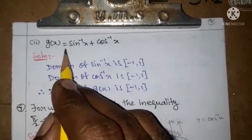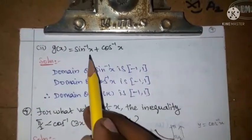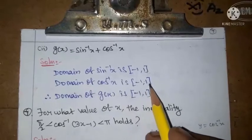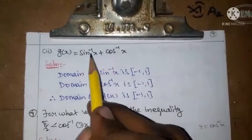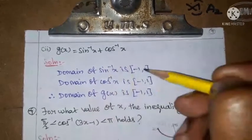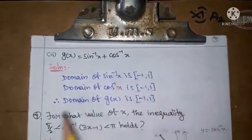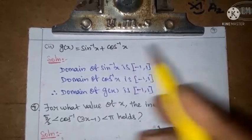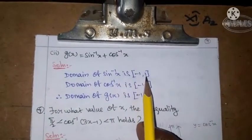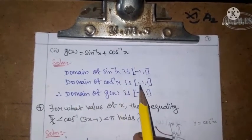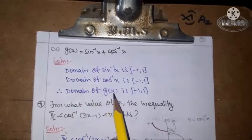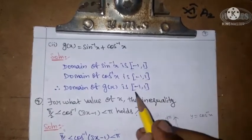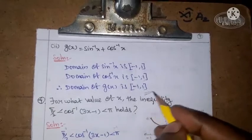For the second sub-part, g of x equal to sin inverse x plus cos inverse x. The domain of sin inverse x is minus 1 to 1, and the domain of cos inverse x is also minus 1 to 1. Therefore, the domain of g of x is the common domain, which is minus 1 to 1.